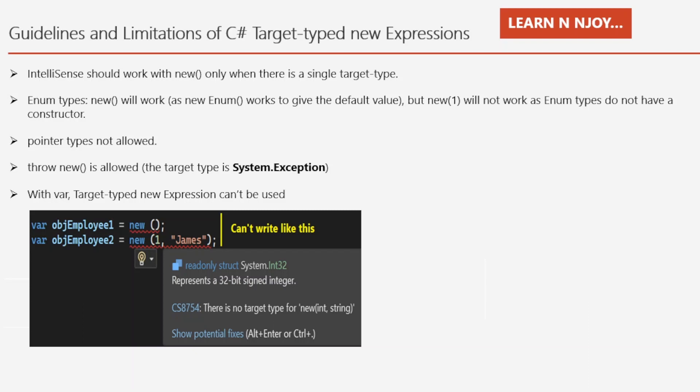That brings me to the end of this session. To summarize: in this video we saw what target-type new expressions in C# are, how and where we can use them in a program, and then we talked about their guidelines and limitations.